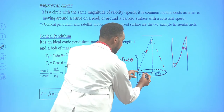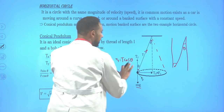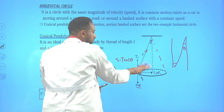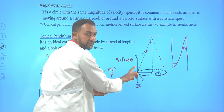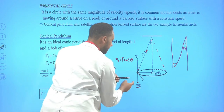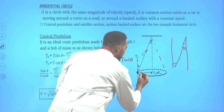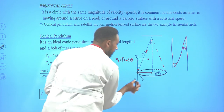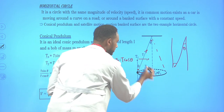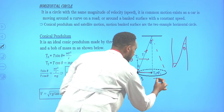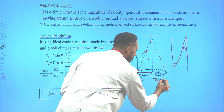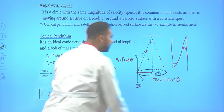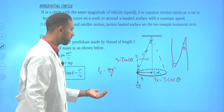The centripetal force arises due to the horizontal component of the tension. This horizontal component is opposite to the angle theta, so T_x = T sinθ. The net force acting towards the center equals the centripetal force.